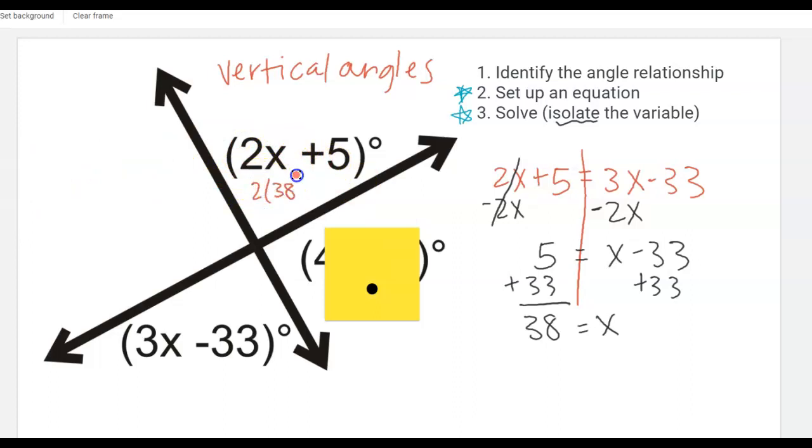I know here I'm going to take 2 times 38 plus 5 and 2 times 38 I get 76 and then plus 5 that's going to give me 81. So I know this angle right here is 81 and if these are vertical angles they should be congruent which is what I did in my equation.